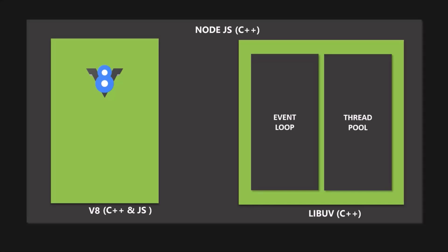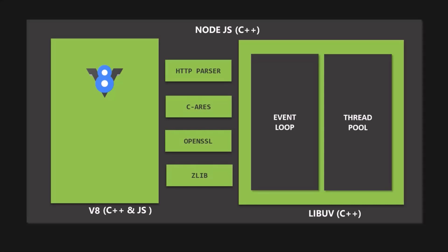Node does not rely only on V8 engine and LibUV as its dependencies. It also has other dependencies like HTTP parser for parsing HTTP, C-ARES for DNS request stuff, OpenSSL for cryptography, and Zlib for compression. These are not that important to understand for now. In the end, when we have all these dependencies nicely fit together, we end up with Node.js runtime ready to be used on the server side. And this is a very high-level overview of Node.js architecture.